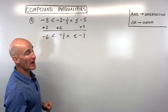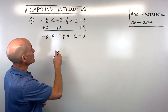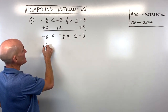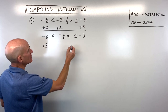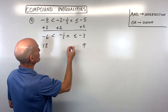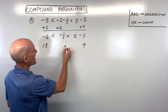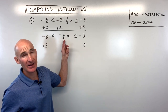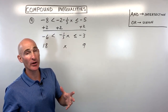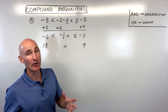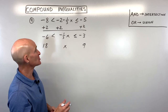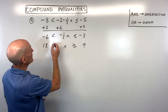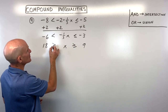To isolate x in the middle, we multiply everything by negative 3 (the reciprocal of negative one-third). That gives 18 on the left, 9 on the right, and x in the middle. But remember, multiplying by a negative flips the inequality signs — so this becomes greater than or equal to and greater than.